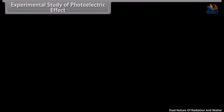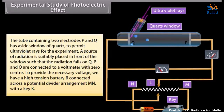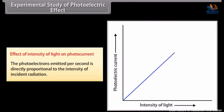For the experimental study of the photoelectric effect, the apparatus consists of a tube containing two electrodes P and Q, with a side window of quartz to permit ultraviolet rays. A source of radiation is placed in front of the window such that radiation falls on Q. P and Q are connected to a voltmeter with zero center. A high-tension battery B is connected across a potential divider arrangement MN with a key K to provide the necessary voltage. The photoelectrons emitted per second are directly proportional to the intensity of incident radiation.